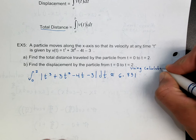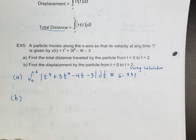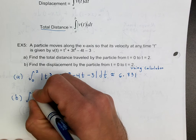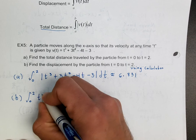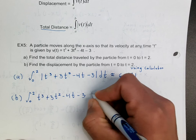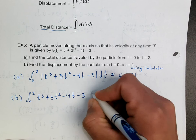For part b, to find the displacement, the antiderivative of velocity is displacement. So we integrate t³ + 3t² - 4t - 3 dt, and when you do that you get around negative 2. So 6.831 is the total distance traveled, and negative 2 is the total displacement.